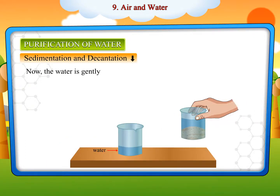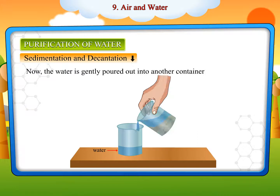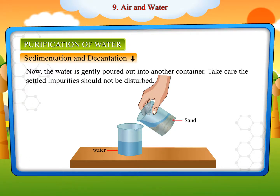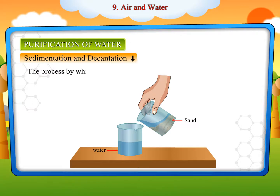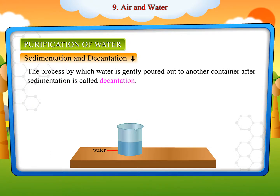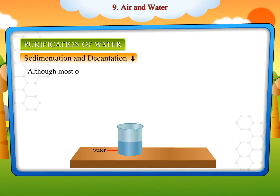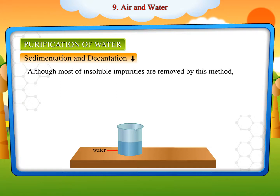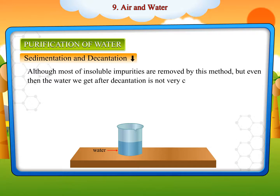The water is then gently poured out into another container, taking care that the settled impurities are not disturbed. The process by which water is gently poured into another container after sedimentation is called decantation. Although most insoluble impurities are removed by this method, the water obtained after decantation is not very clean, as it may still contain very fine impurities.